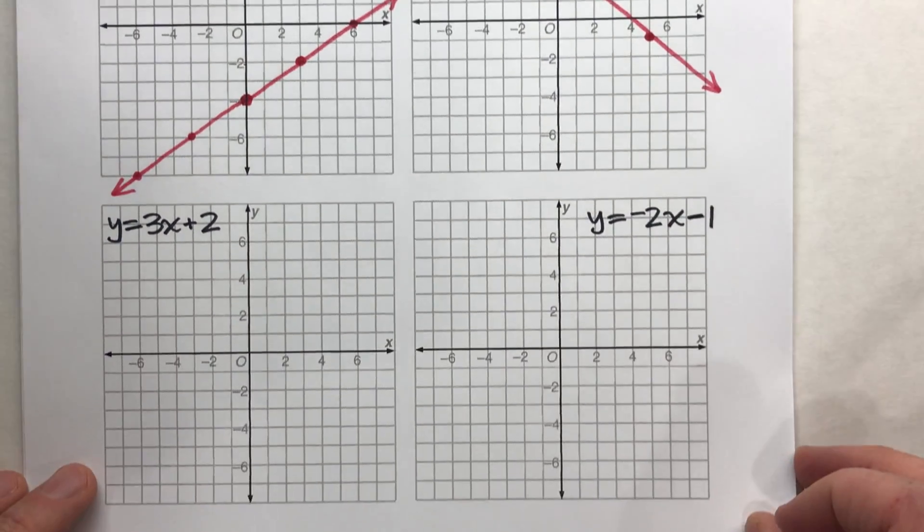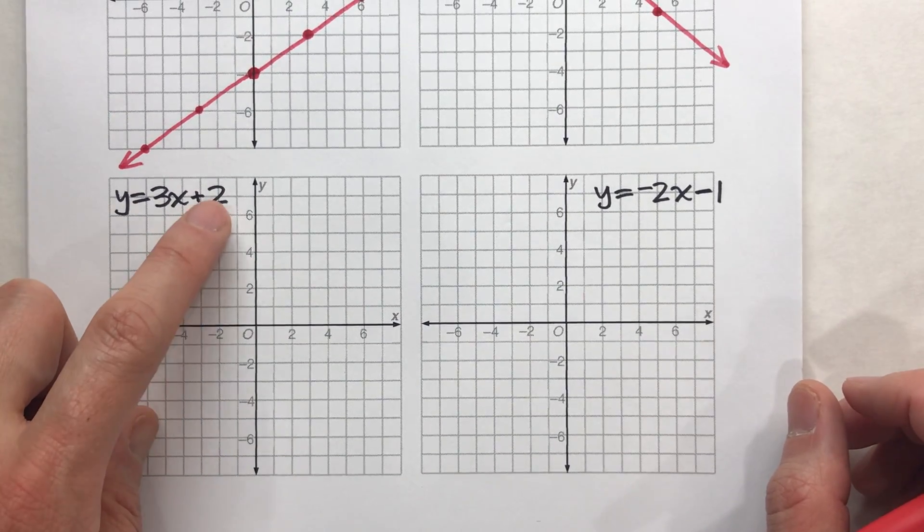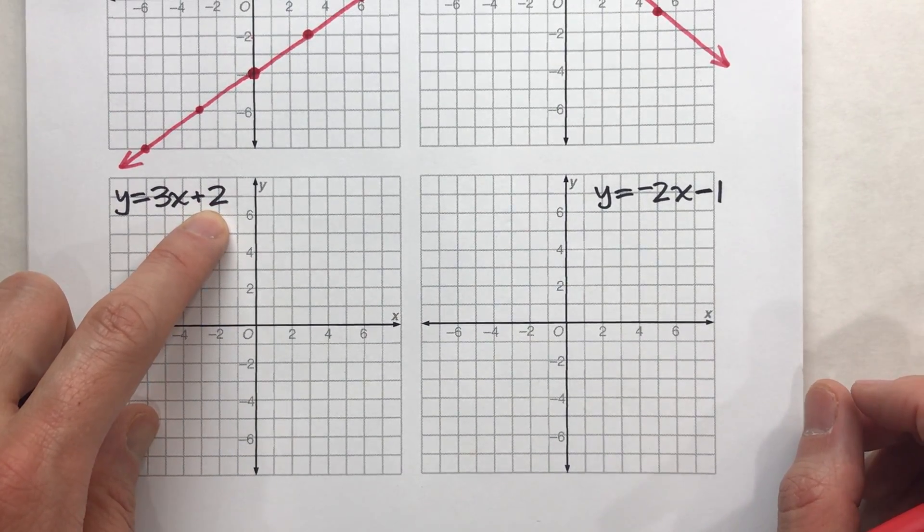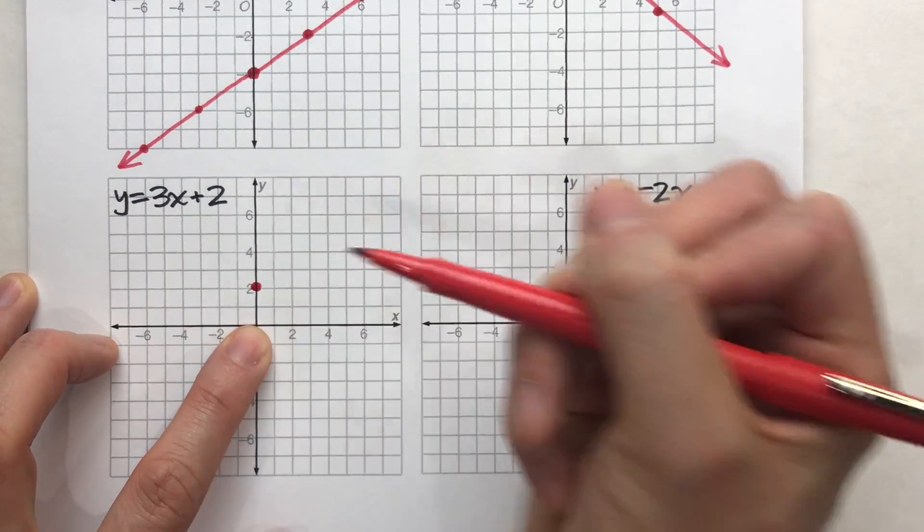Let's do two more. Y equals three x plus two. Again, the number added at the end, that two, positive two, that's my y-intercept. So on the y-axis, here's positive two.